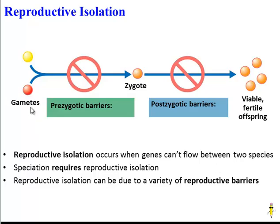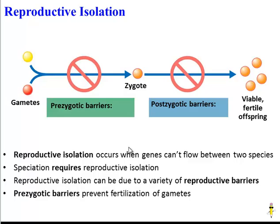If the barriers prevent the gametes from getting together, then we call those prezygotic barriers, because the zygote never forms. Some barriers occur after the zygote forms, and those are called postzygotic barriers — so the egg and the sperm will fuse, but the zygote doesn't develop properly into viable, fertile offspring. Viable means they survive, and fertile means they can reproduce.